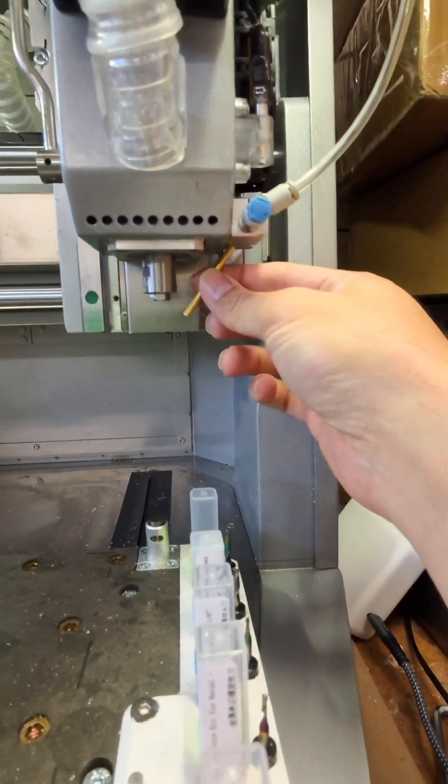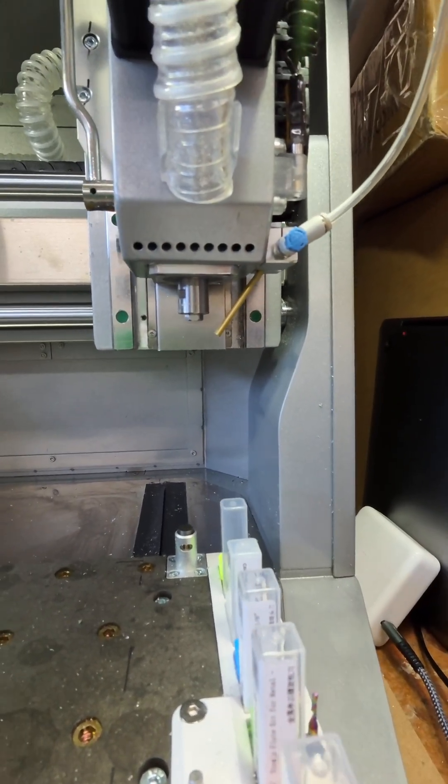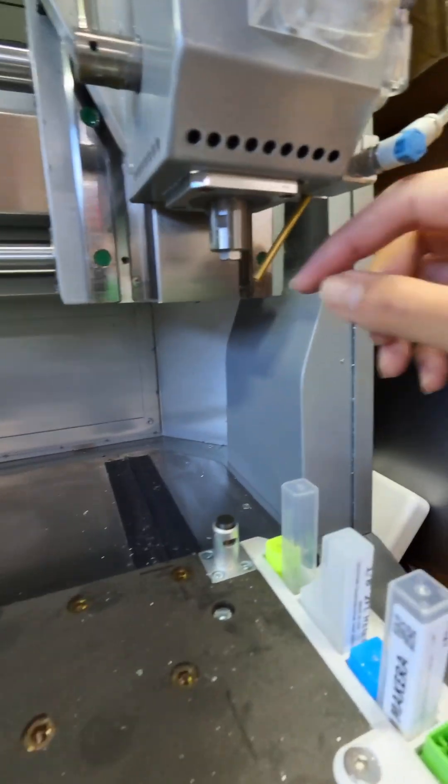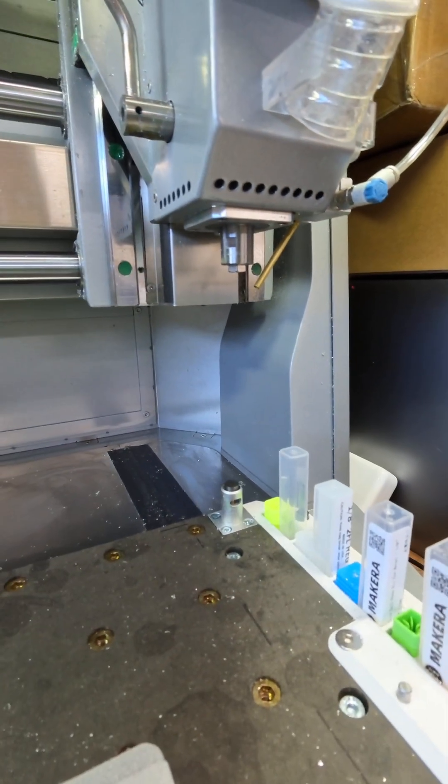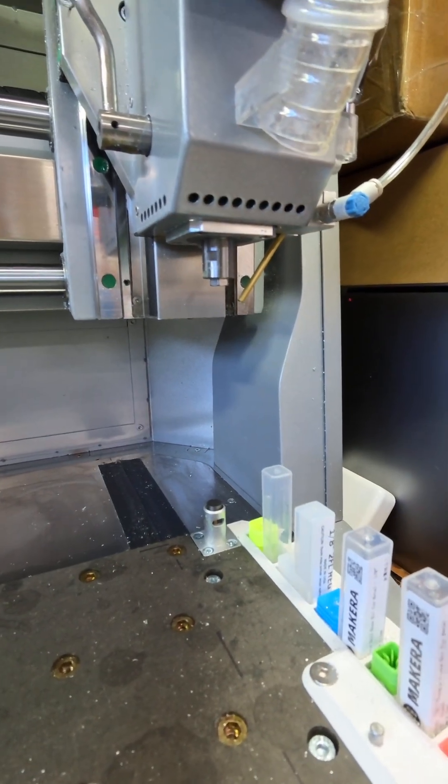And then I put a little brass tube right there. It's like a three and a half millimeter tube. We'll put the air right on the tool instead of out here. It's more difficult to aim.